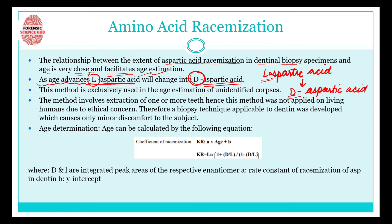Racemization occurs as age progresses. In a living body, newly synthesized proteins are normally in the L-form. With time, racemization converts them into the D-form. By calculating the amount of D-aspartic acid present, we can estimate how old the person is — more D-aspartic acid indicates an older person, while more L-aspartic acid indicates a younger person.